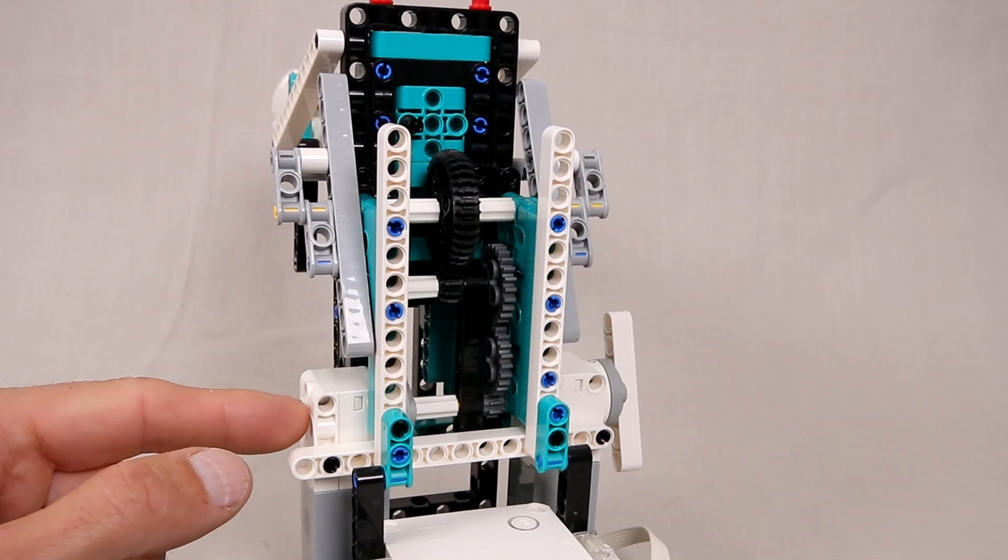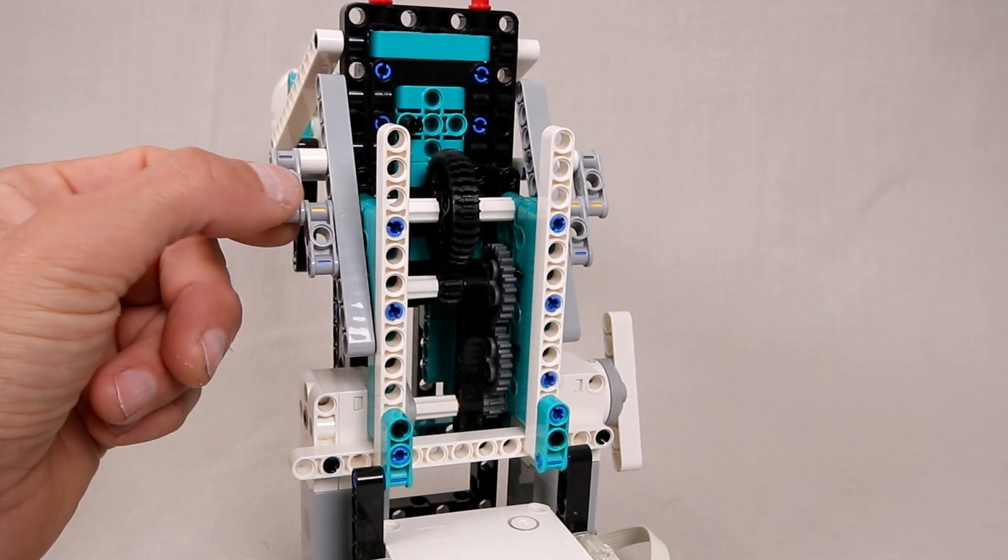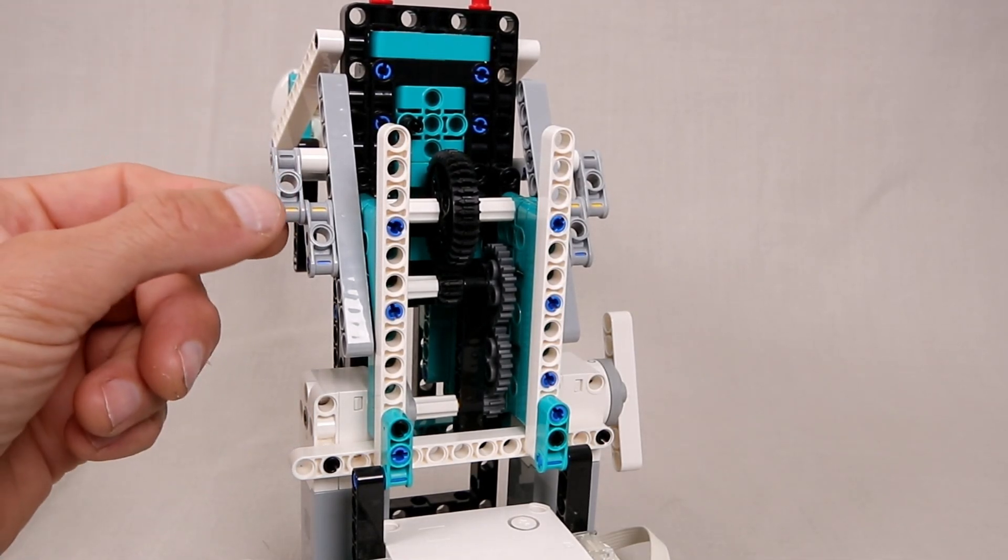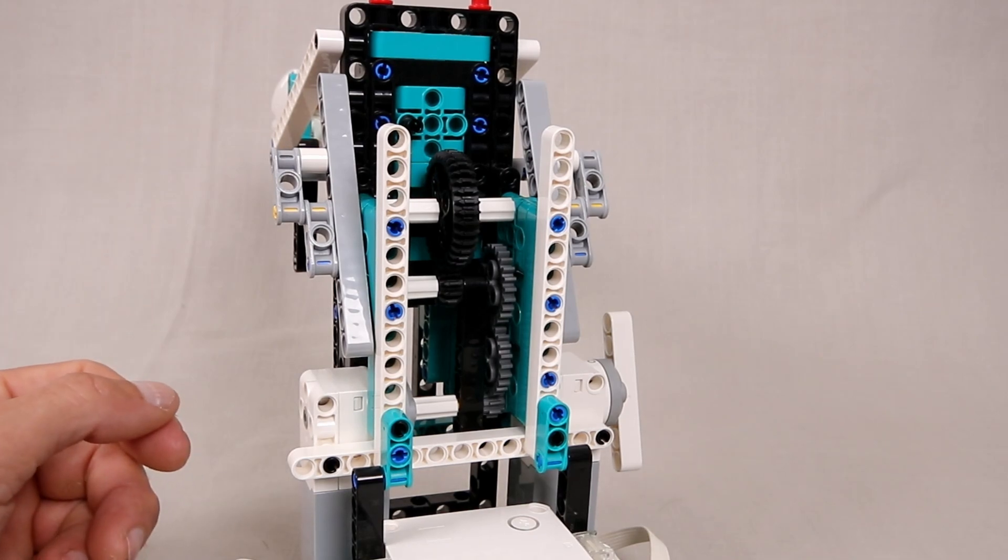Of course three times three is nine which means for every nine rotations of the motor there will be one rotation of the launch arms which again just gives us a lot more torque to load energy into those rubber bands.